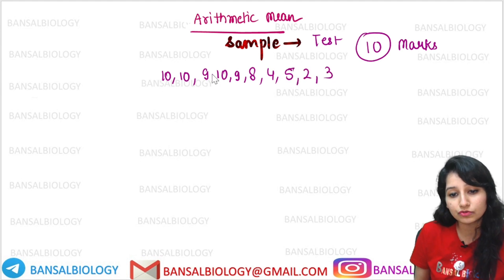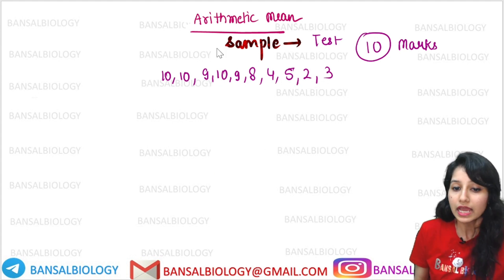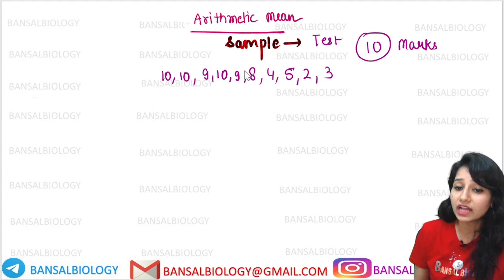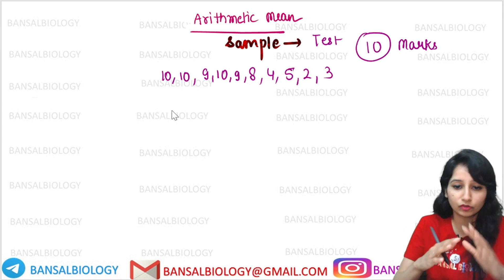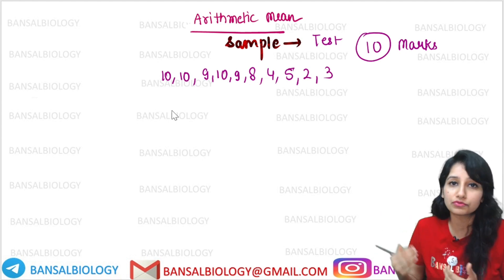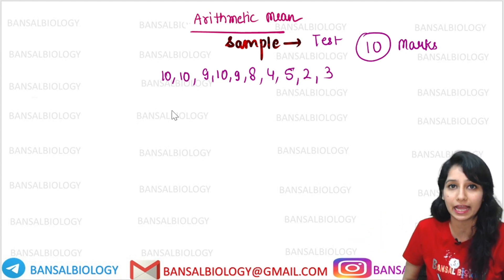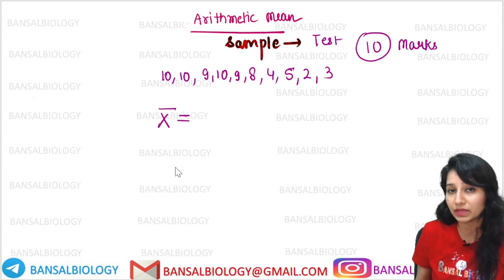So we have taken it here: 3 students scored 10 marks, 2 students scored 9 marks, one scored 8, one scored 4, one scored 5, one scored 2, and one scored 3. Now I have to know what was the average in my class — how many marks have come on average. So what will I have to calculate? I have to calculate the Arithmetic Mean.